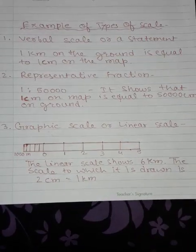The last type is the graphical method or linear scale. In this method we show the scale in the form of a graph or lines — for example, a line of six centimeters divided into sections where each two centimeters is equal to one kilometer on the ground. So two centimeters on the map is equal to one kilometer on the ground.